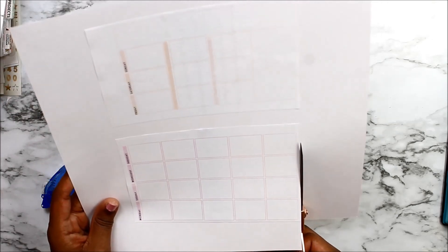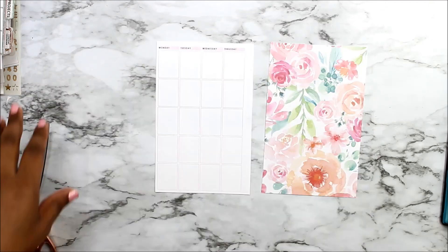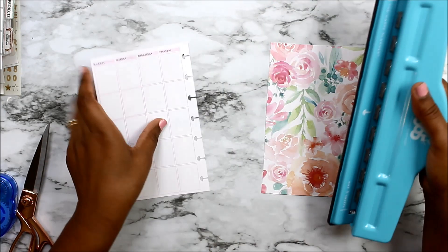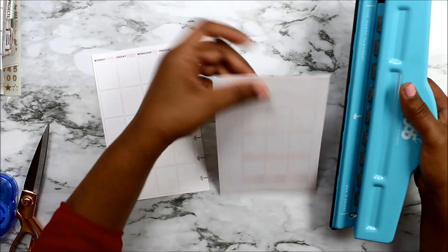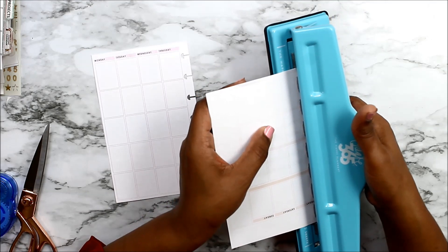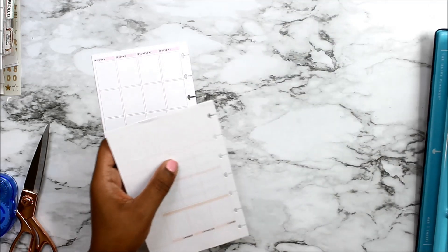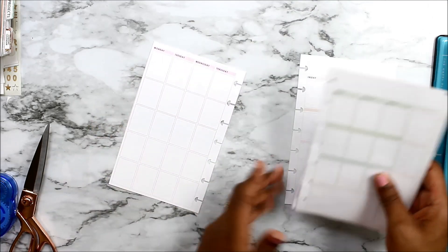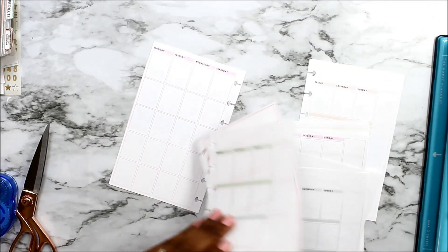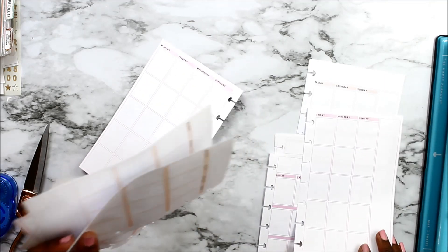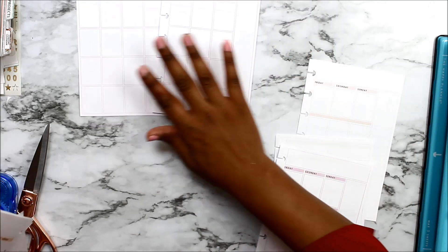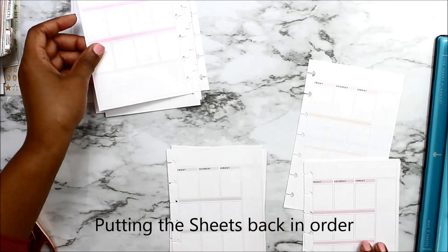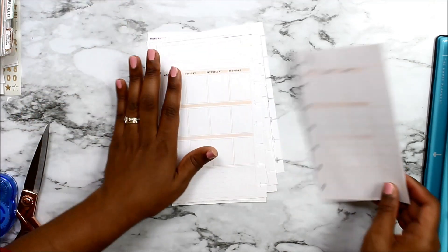Once I glue it on there, I'm just going to cut it back out. Now that these are cut out, I'm going to go ahead and punch them. You don't have to do this to both of these blank sheets. You can just do it to one of them, but I like to do it with both of them because I like extra space in between layouts. I'm just putting these all back in order.